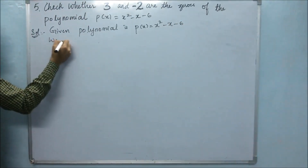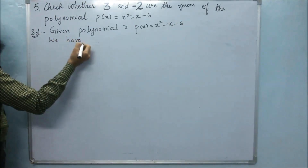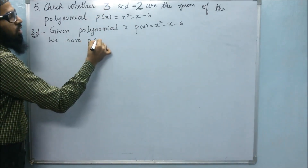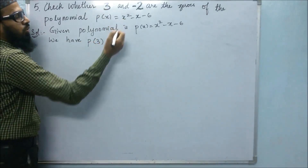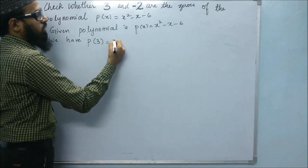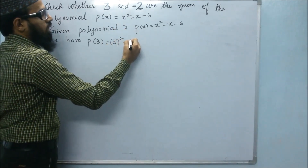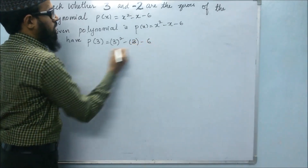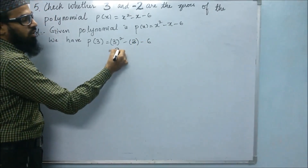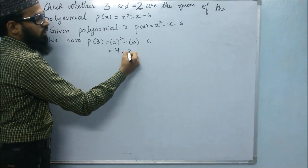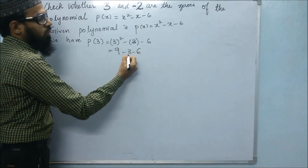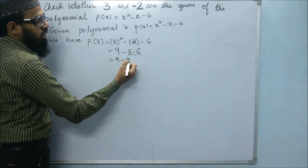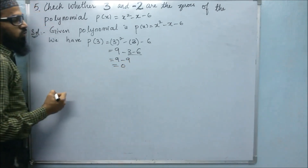Next, we find P of 3. Substituting in place of x the value 3: 3 square minus 3 minus 6. Now, 3 square is 9, minus 3 minus 6 is minus 9. So 9 minus 9 is 0.